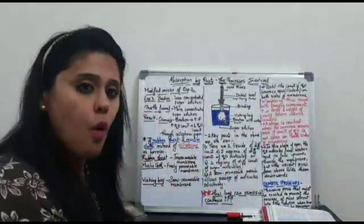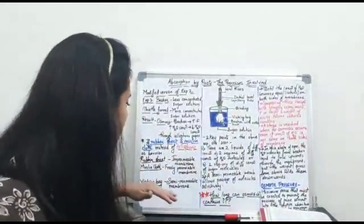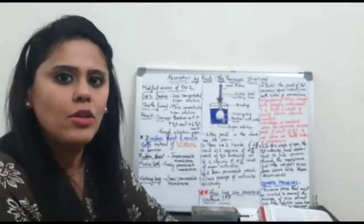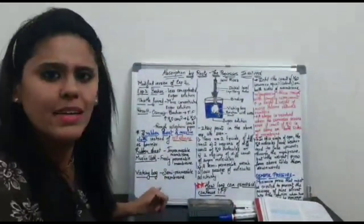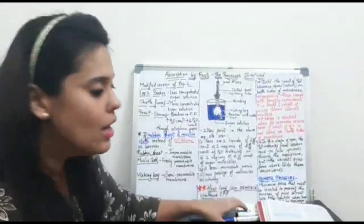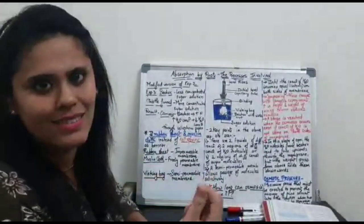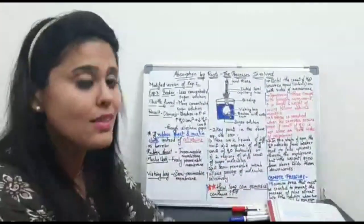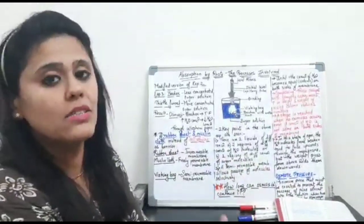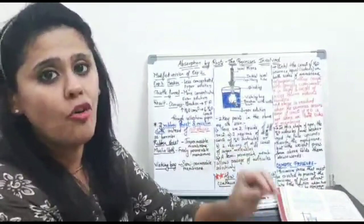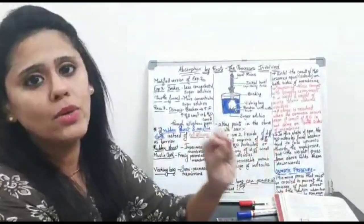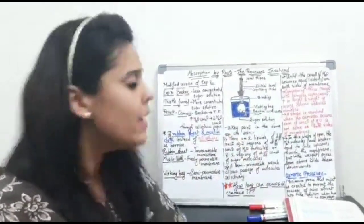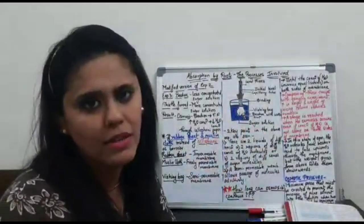The third case: what if we use a visking bag? A visking bag is a bag made up of cellulose material. You can search for this material if you are unfamiliar with it. This material acts as a semi-permeable membrane, meaning it allows only the passage of solvent molecules — only water molecules — to pass through.